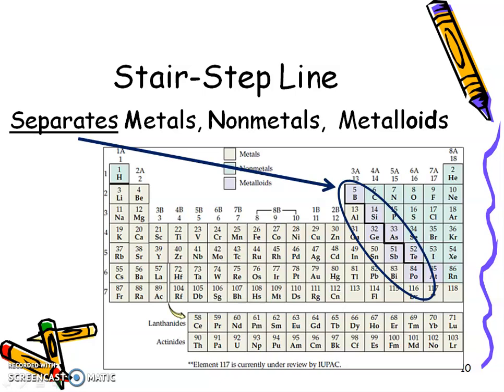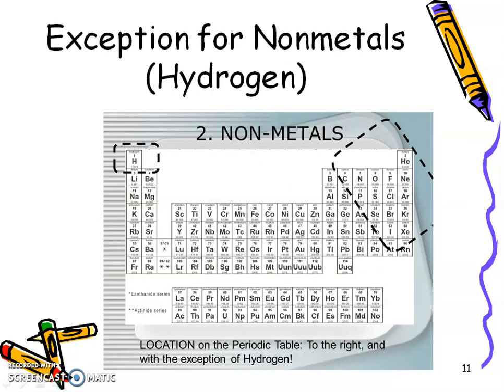So we talked about that stair-step line. Again, it's just a way of separating those metals and non-metals, and the ones that touch it are the metalloids. So we want to remember some exceptions. He talked about hydrogen.